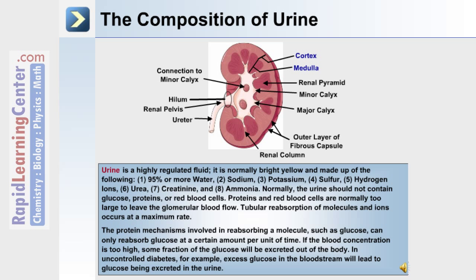Tubular reabsorption of molecules and ions can occur at a maximum rate. The protein mechanisms involved in reabsorbing a molecule such as glucose can only reabsorb glucose at a certain amount per unit of time. If the blood concentration is too high, some fraction of that glucose will be excreted out of the body. In uncontrolled diabetes, for example, excess glucose in the bloodstream will lead to glucose being excreted in the urine.